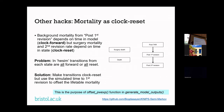Another issue: in hesim, all transitions out of each state must be either clock-reset or clock-forward. Background mortality depends on your age — which depends on time in the model (clock-forward) — whereas revision rates depend on time spent in the state (clock-reset). To handle this, we used the simulated time to first revision to offset the life table mortality with an offset piecewise exponential model — that was another hack.